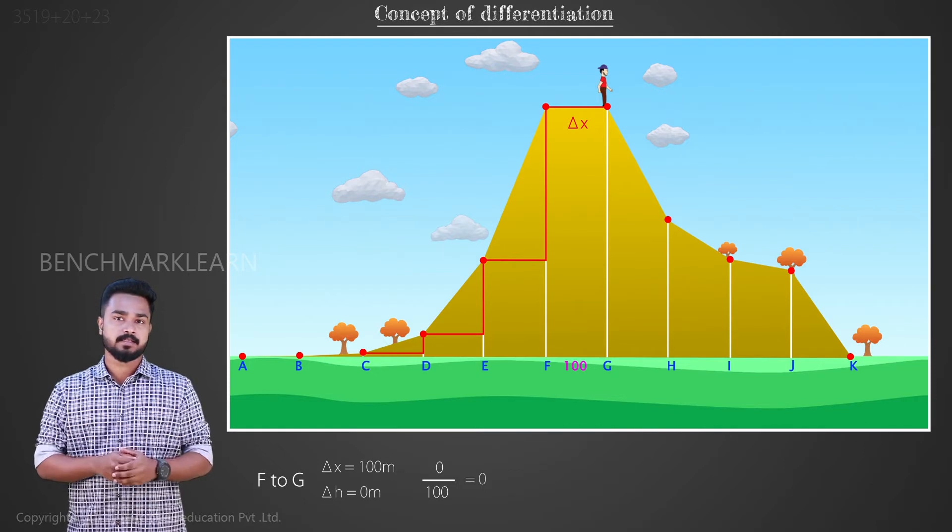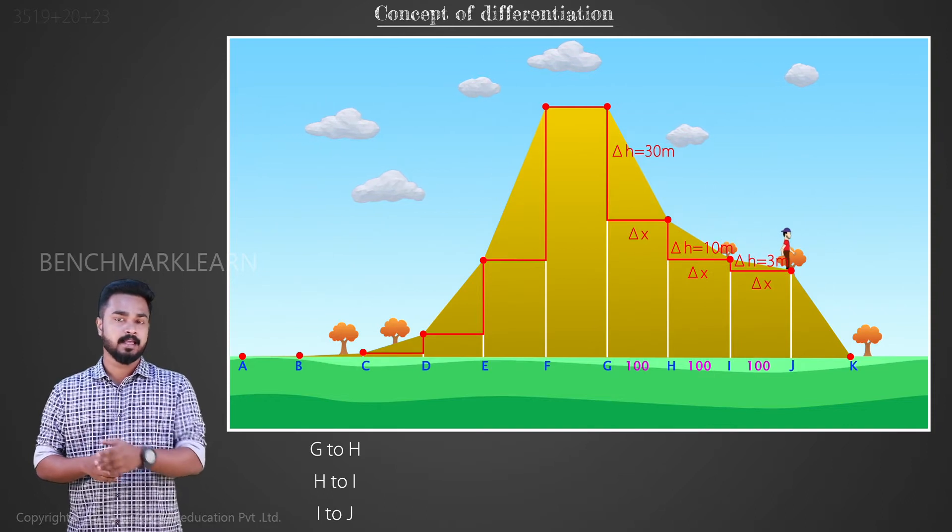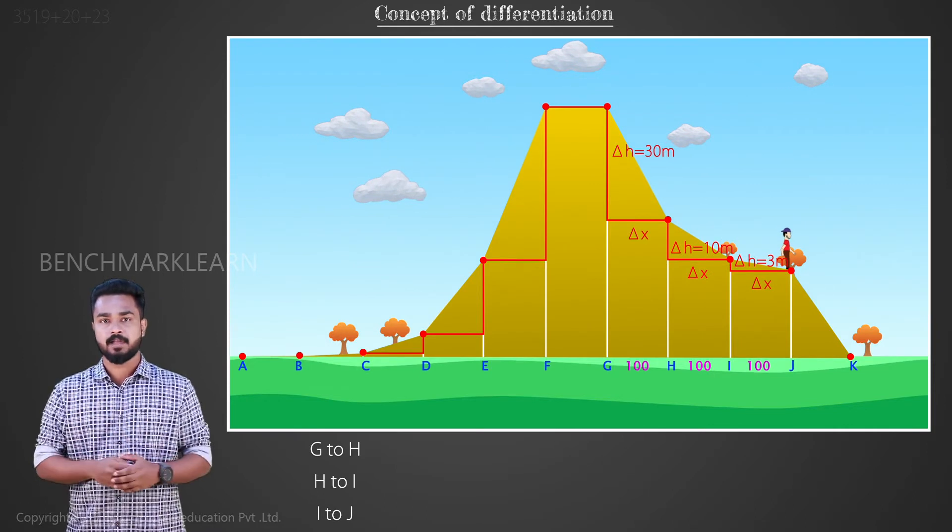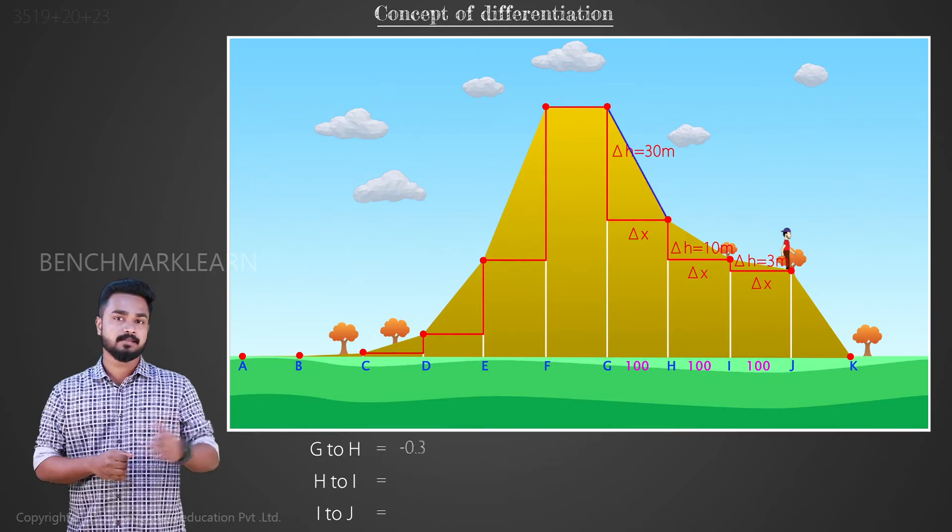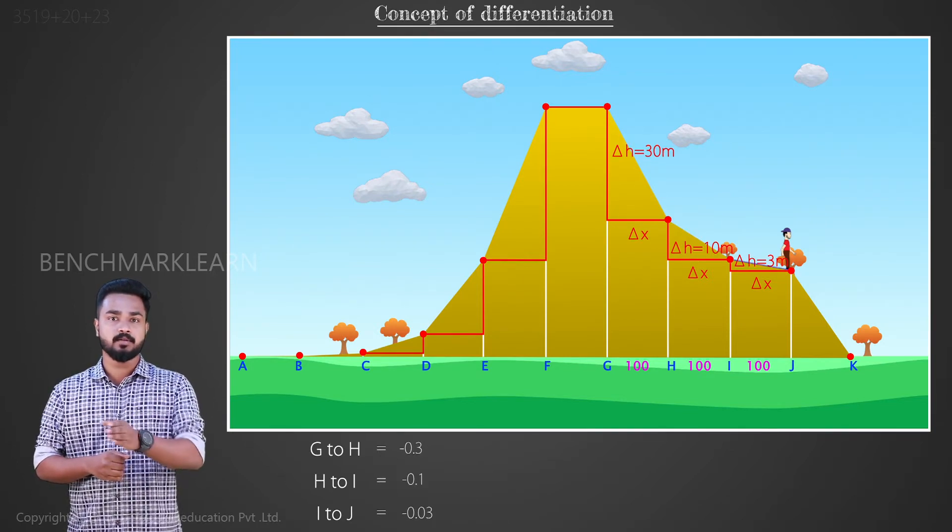Between the points G and H, H and I, and I and J, the hill is descending and the slope becomes negative. Their slopes are −0.3, −0.1, and −0.03 respectively.